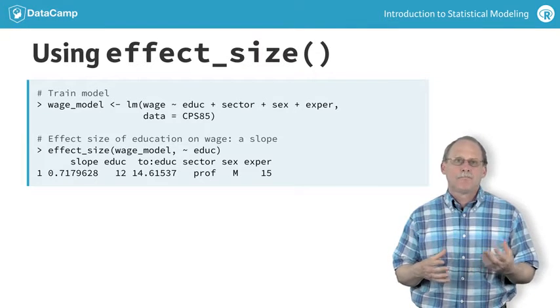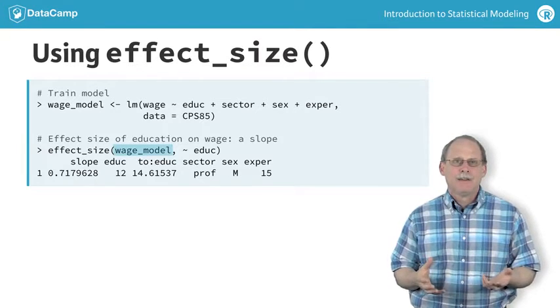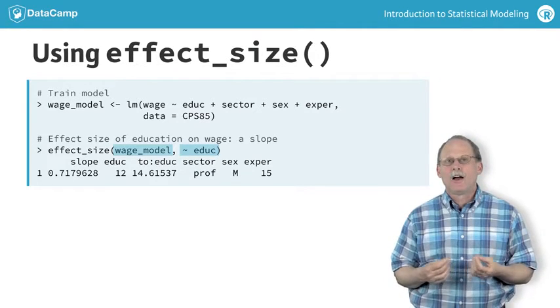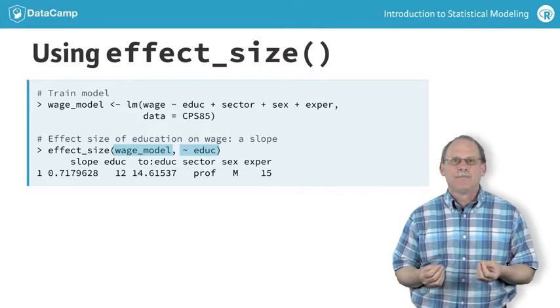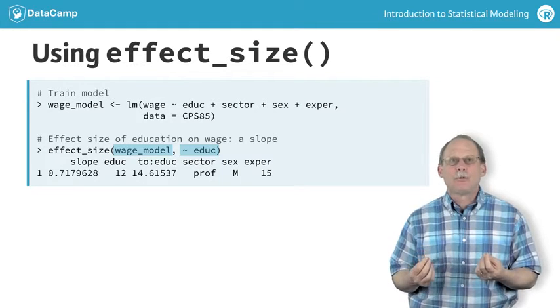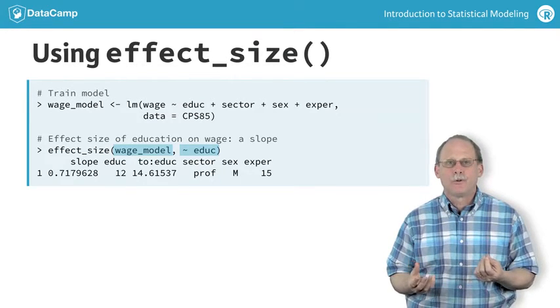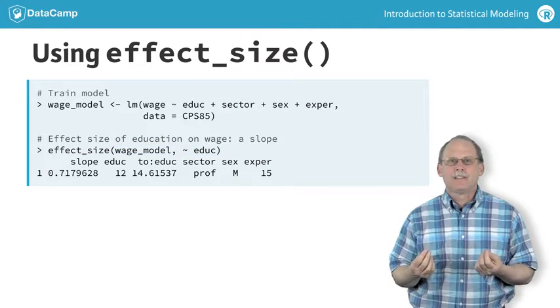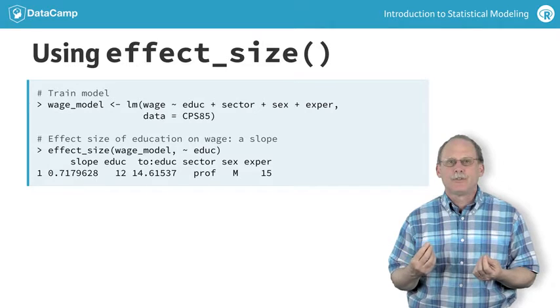The function takes two arguments, the model you are examining and a very short formula with just one explanatory variable on the right side of the tilde. This identifies the variable whose effect size you are looking for. Later in the course, you'll see another advantage of effect_size. It lets you find a confidence interval.